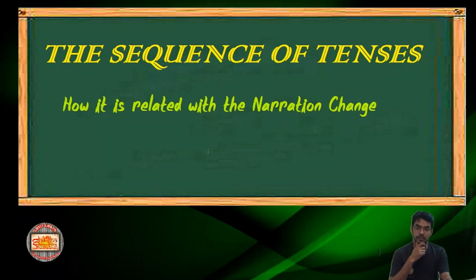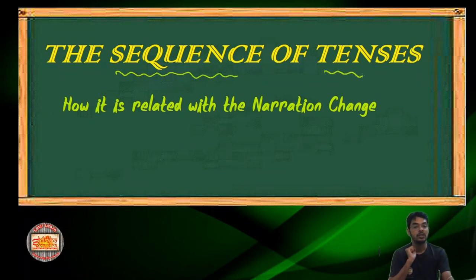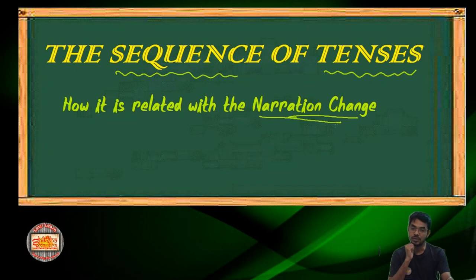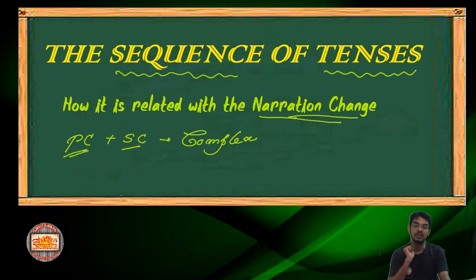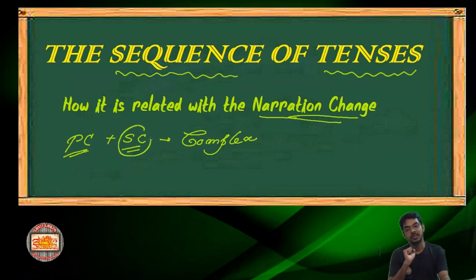The sequence of tenses. What is the sequence of tenses? Have you ever considered what sequence we are talking of and how it comes handy for the uses of tenses, particularly in narration change? It comes from the point when we use a principal clause and a subordinate clause — that means in a complex sentence — when you use a principal clause and one or more subordinate clauses, an adjustment of the tenses is required. The tense of the subordinate clauses follows the tense of the principal clauses.